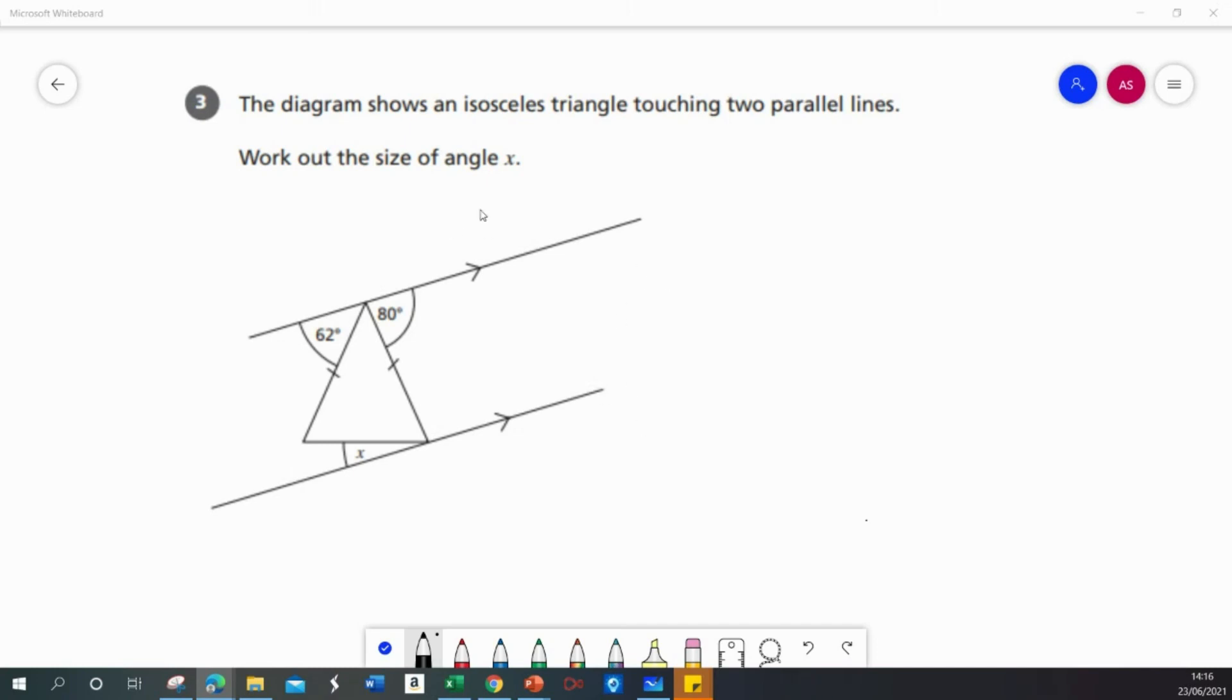This question shows a diagram showing an isosceles triangle touching two parallel lines. We've got to work out the size of angle x and I can see angle x down here on the diagram.